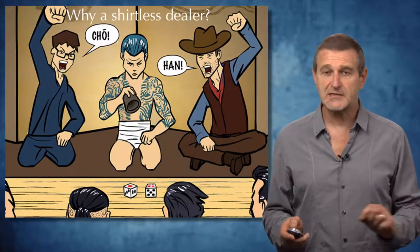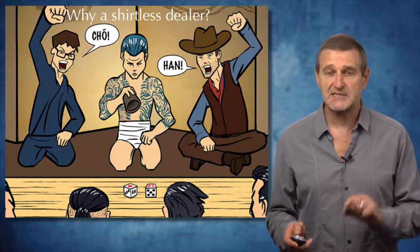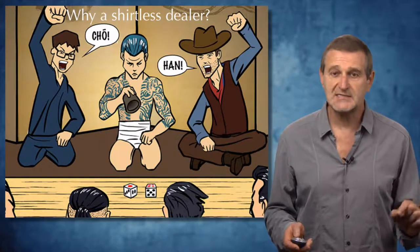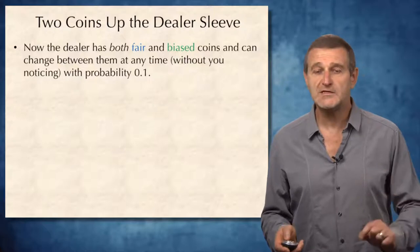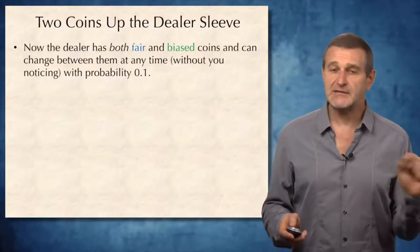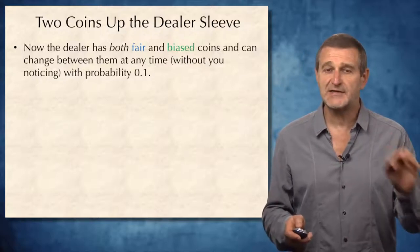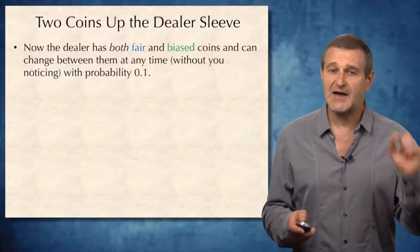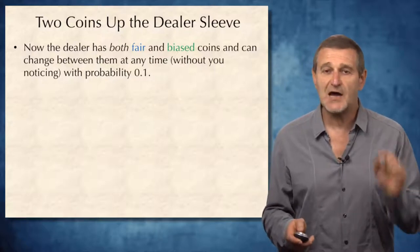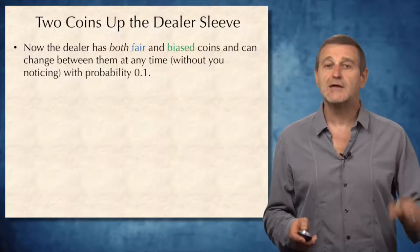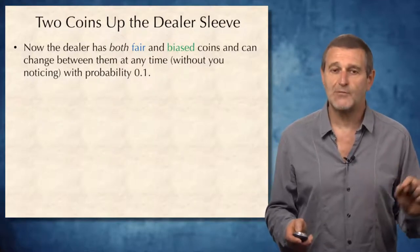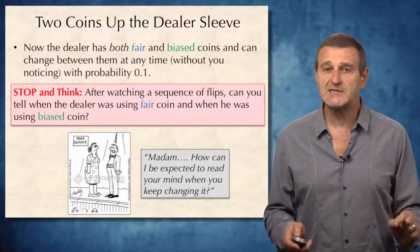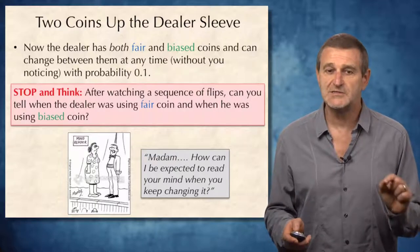The dealers in traditional Yakuza-run casinos were made to wear sleeveless garments to avoid accusations of tampering with dice, since a sleeveless dealer is less likely to switch fair dice for biased ones. But in reality, even sleeveless dealers were able to switch. We will model these situations with two coins up the dealer's sleeve, where instead of always using one coin, the dealer can change coins at any moment with probability 0.1.